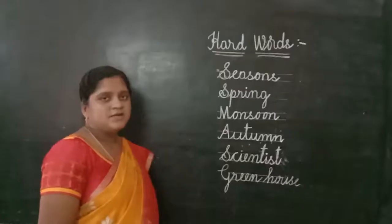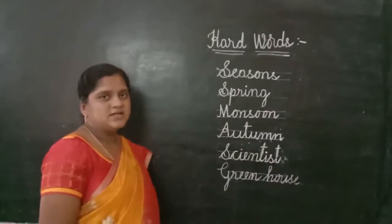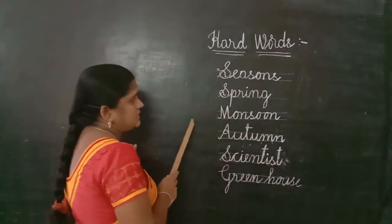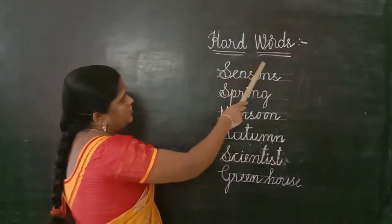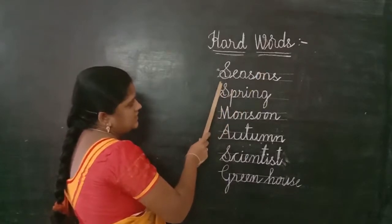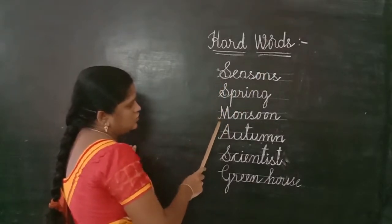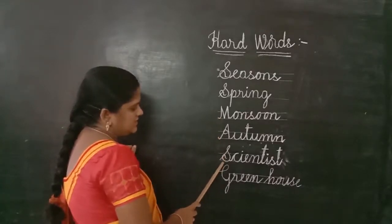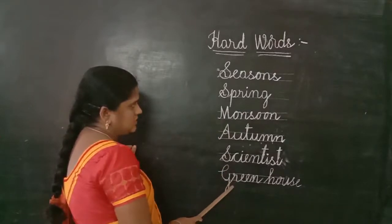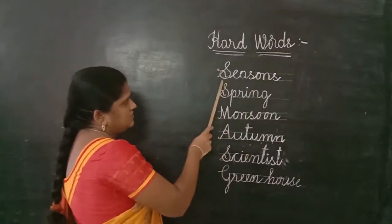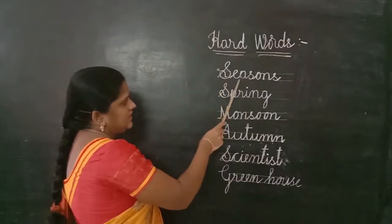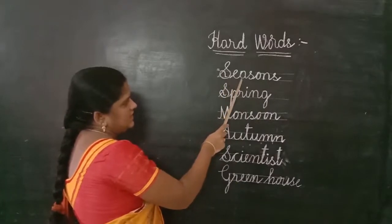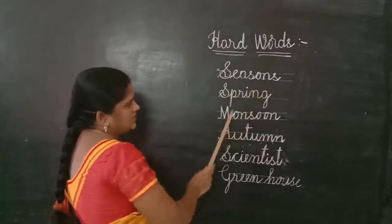Today's home task: learn and write the following words three times. First word: Seasons — S-E-A-S-O-N-S. Second word: Spring — S-P-R-I-N-G. Third word: Monsoon — M-O-N-S-O-O-N.